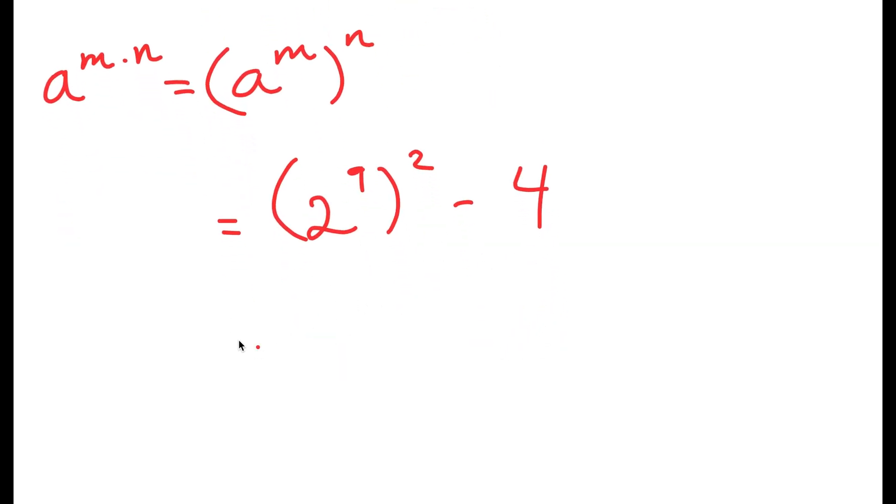Now, 4, I'm going to rewrite as 2 squared. So I get 2 to the power of 9 to the power of 2 minus 2 squared.